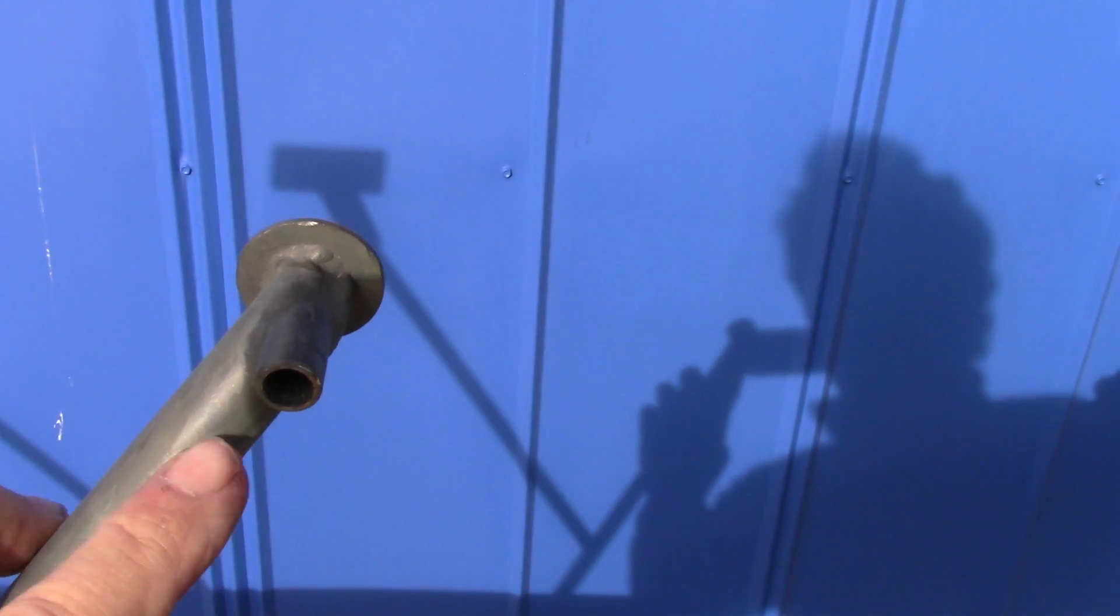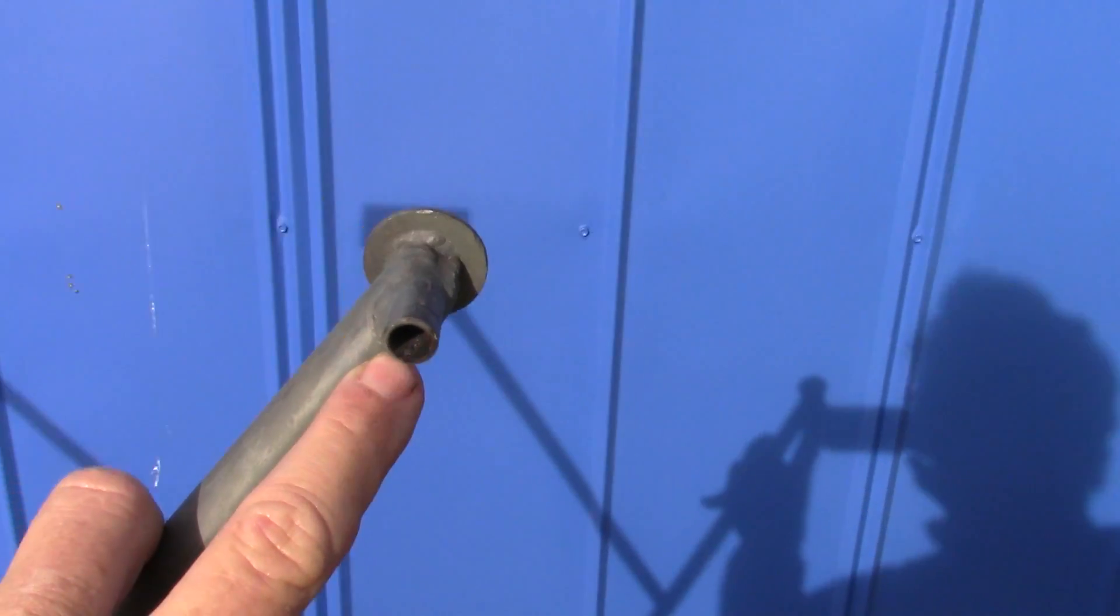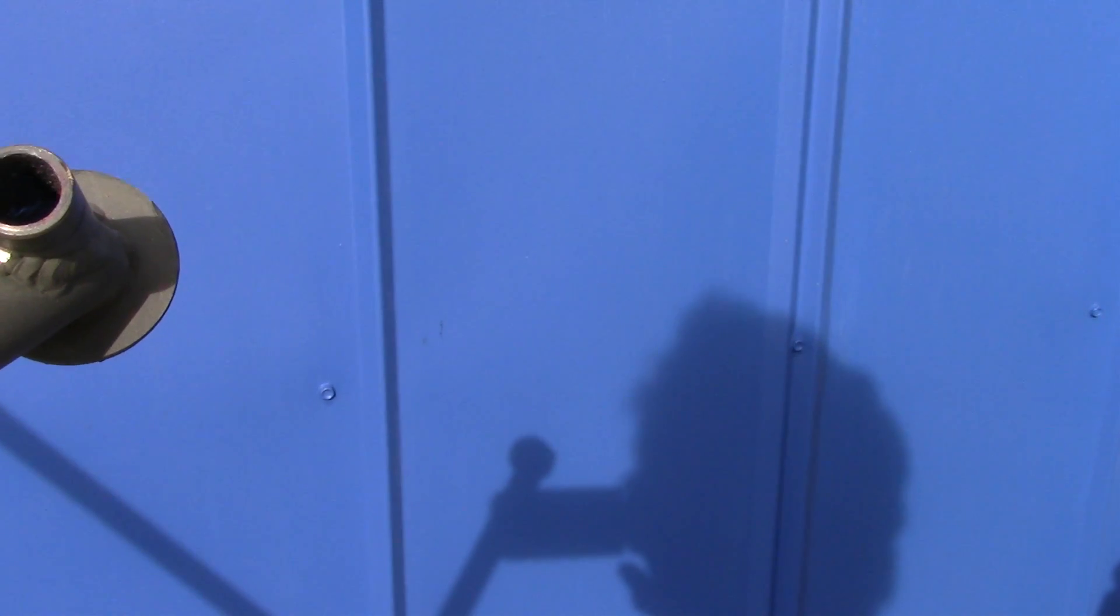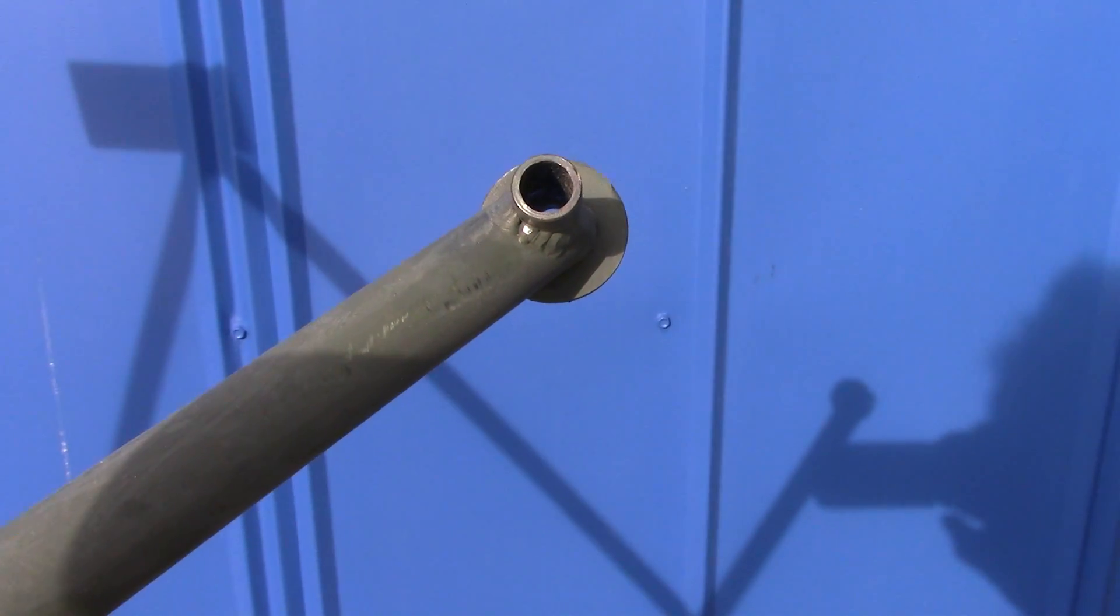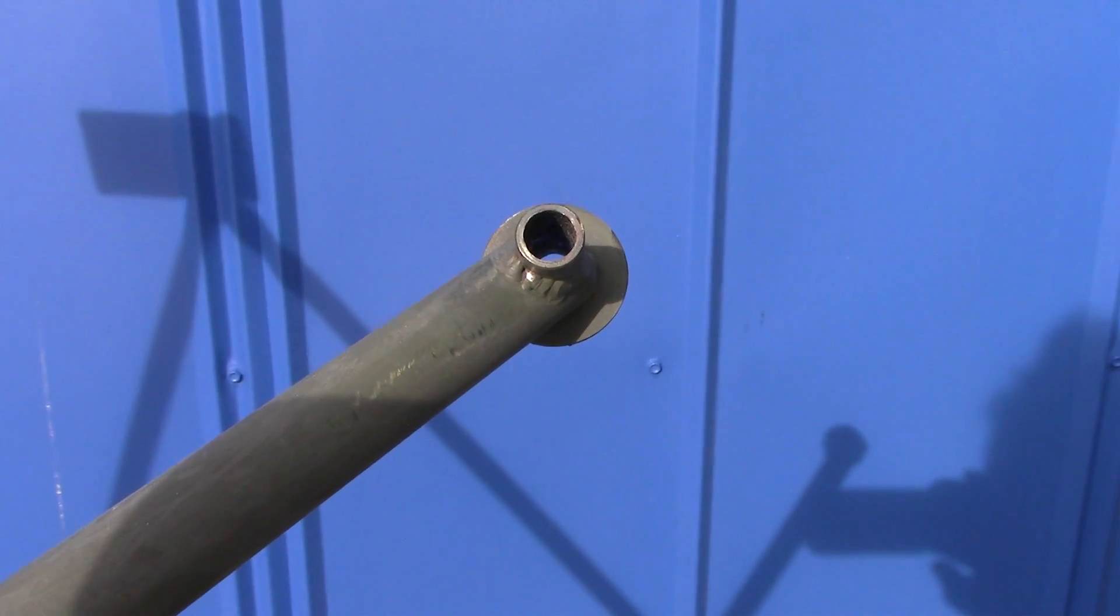But I want you to take a look at that one right there and see how much space there is right there. And let's get a look at the underside of that. There's an incomplete weld. There's a pocket right there on the underside of it, right there on the bottom.